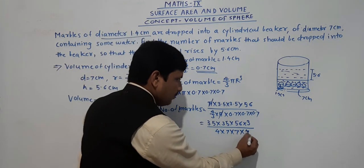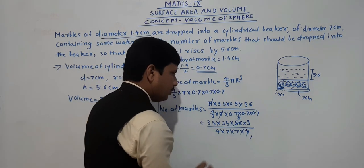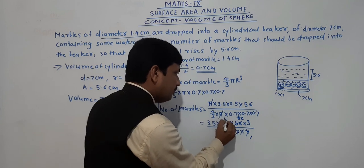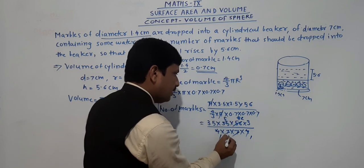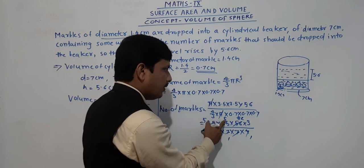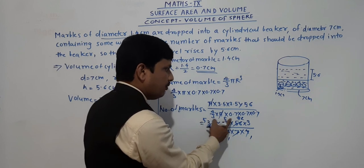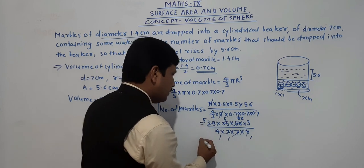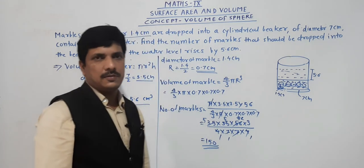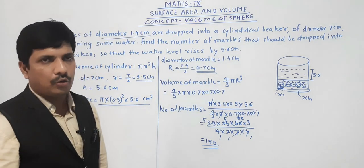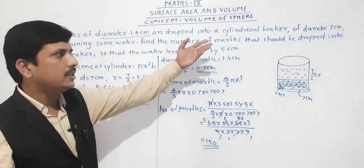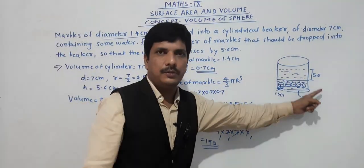Now simplifying: 7 × 8 = 56, 4 × 2 = 8, 7 × 5 = 35, again 7 × 5 = 35. What remains is 5 × 5 = 25, 25 × 2 = 50, 50 × 3 = 150. So there are 150 marbles dropped into the cylindrical jar, at which point its height increases by 5.6 centimeters.